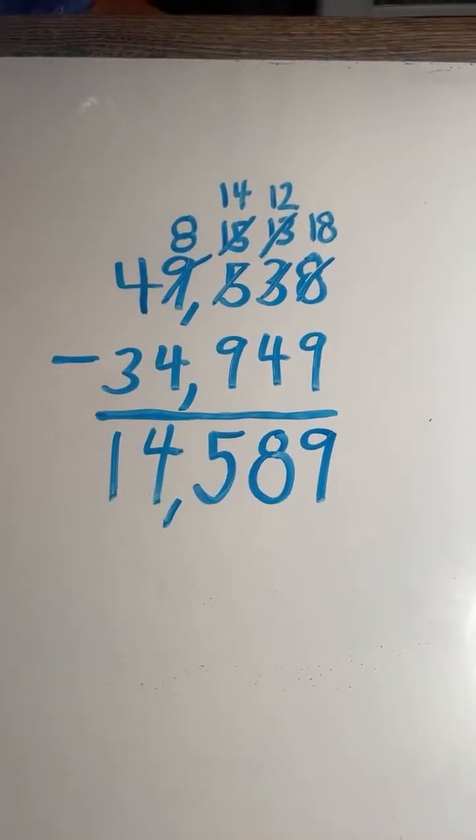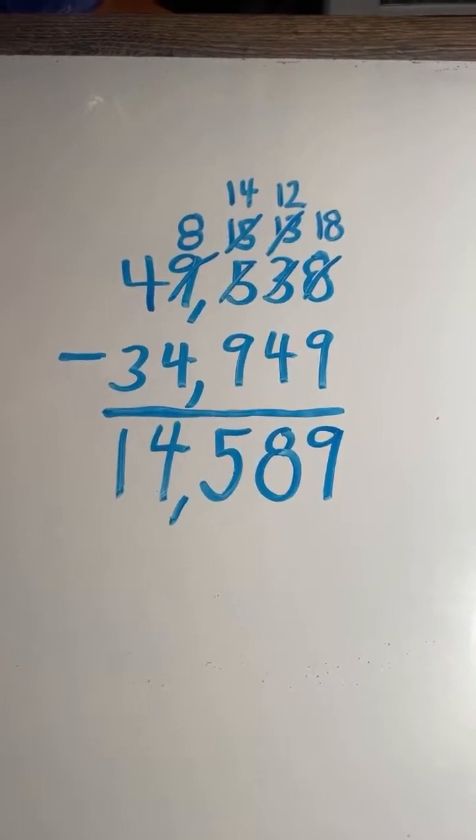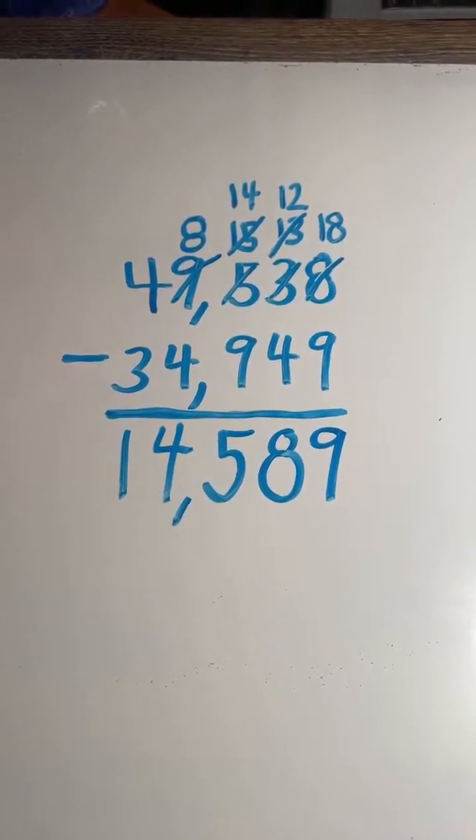And we have our final answer. 49,538 minus 34,949 equals 14,589.